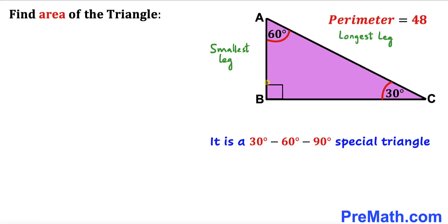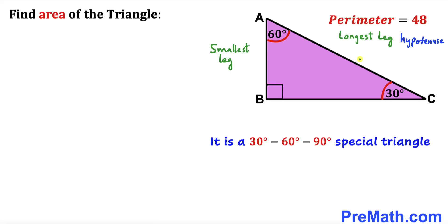And 90 degrees is our largest angle, so the side opposite to this angle is going to be our longest leg. This longest leg is also called the hypotenuse. In a special 30-60-90 triangle, the longest leg is always twice the smallest leg.